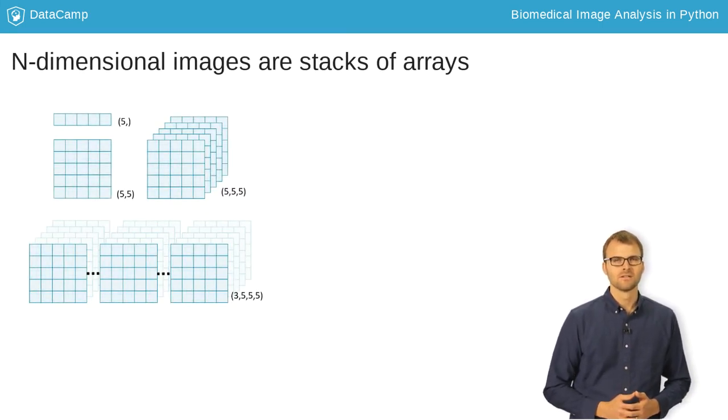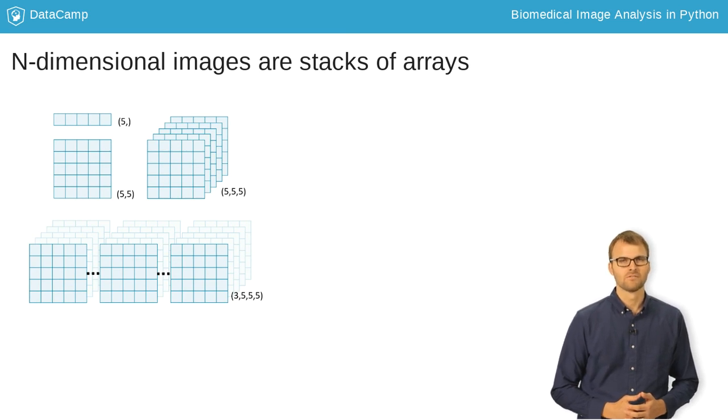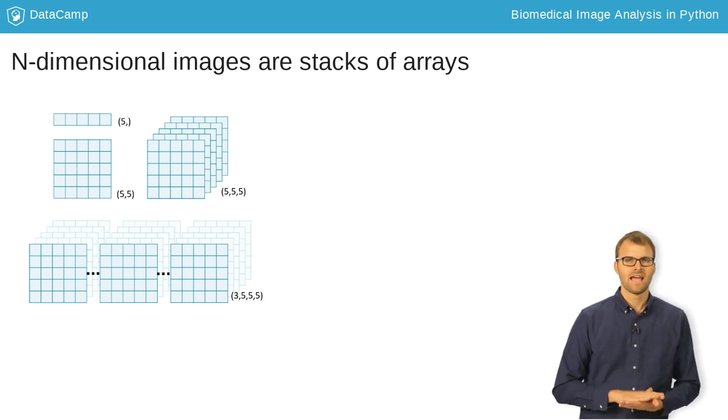Just as a 2D image is a stack of one-dimensional vectors, 3D, 4D, and even higher dimensional images can be thought of as stacks of simpler ones. Let's illustrate this by creating a 3D volume from a few 2D images.